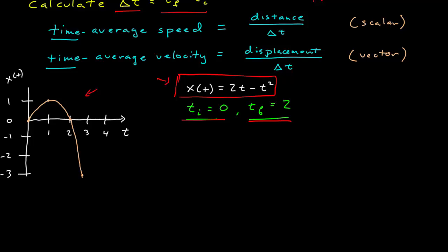So first, I need to find the distance. The distance traveled between 0 and 2 is it goes up to 1 meter and then back down to 0. So the total distance traveled is equal to 2 meters. Well, I also need to calculate the time difference, and the time difference is equal to the final time minus the initial time, and so that's equal to 2 seconds. And therefore, the time averaged speed is equal to 2 meters over 2 seconds or 1 meter per second. Fine.